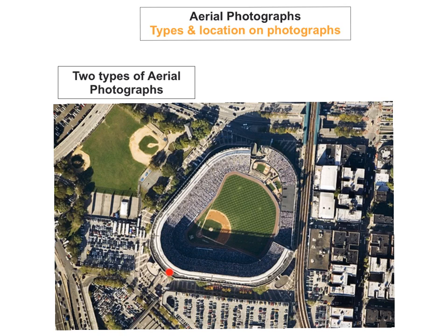Have a look at this photograph. It's either going to be an oblique or a vertical photograph. A vertical photograph is when you cannot see the horizon and an oblique is when you can. Looking all the way around this photograph, I cannot see a horizon anywhere, so it must be a vertical photograph. I also cannot see the sides of the buildings — all I can see is the roofs because I'm looking straight down like a bird's eye view. So this is definitely a vertical photograph.